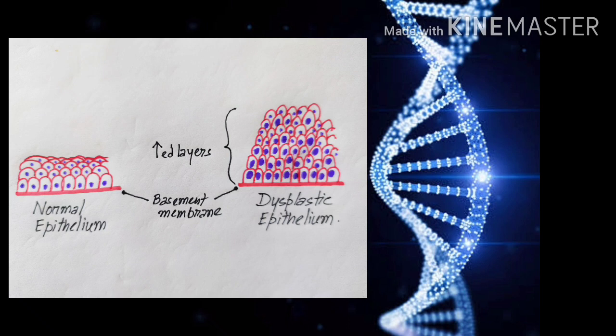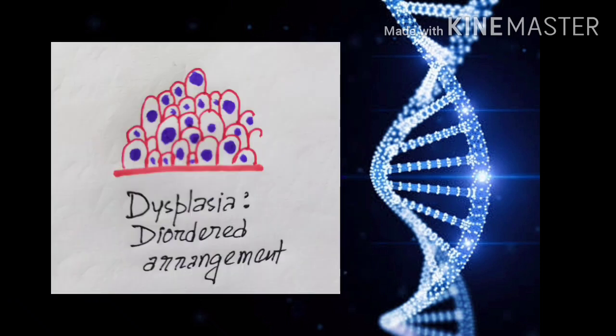Also there is disordered arrangement of cells from the basal layer to the surface layer. That means the cells are not evenly distributed or arranged in distinct layers.